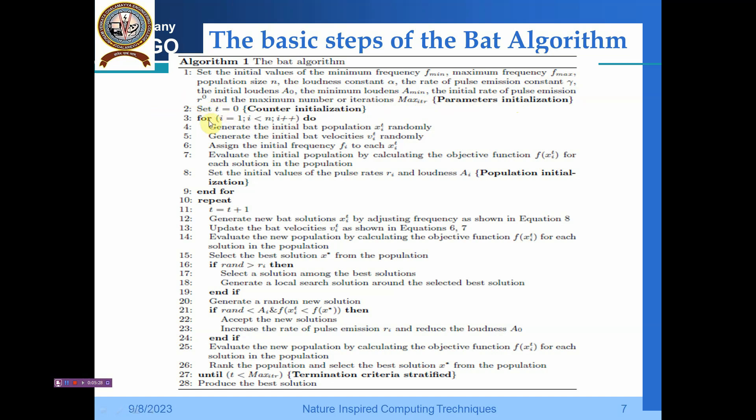Initially, the counter t is set to 0. For i=1 and i<n, i++, we generate the initial bat population x_i(t) randomly, then generate the bat velocity v_i(t) randomly. We assign initial frequency f_i to the bat location x_i(t) and evaluate the initial population by calculating the objective function f(x_i(t)) for each solution. We set the initial values of the pulse rate r_i and the loudness A_i. The population initialization is done, then we end the for loop and repeat. It is incremented: t=t+1.